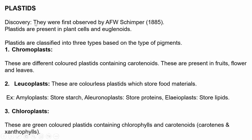The next organelle is plastids. Plastids were first observed by Schimper in 1885 and they are found in plants and euglenoids. Euglenoids are organisms that can perform photosynthesis during the daytime and can use their flagella to procure food like an animal cell during the night. Plastids are classified based on the different types of pigments present in them.